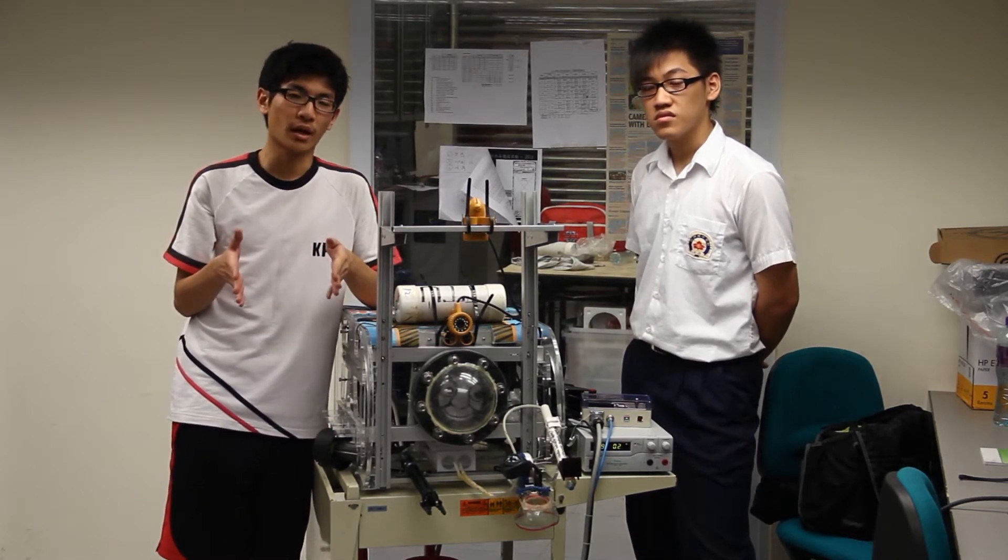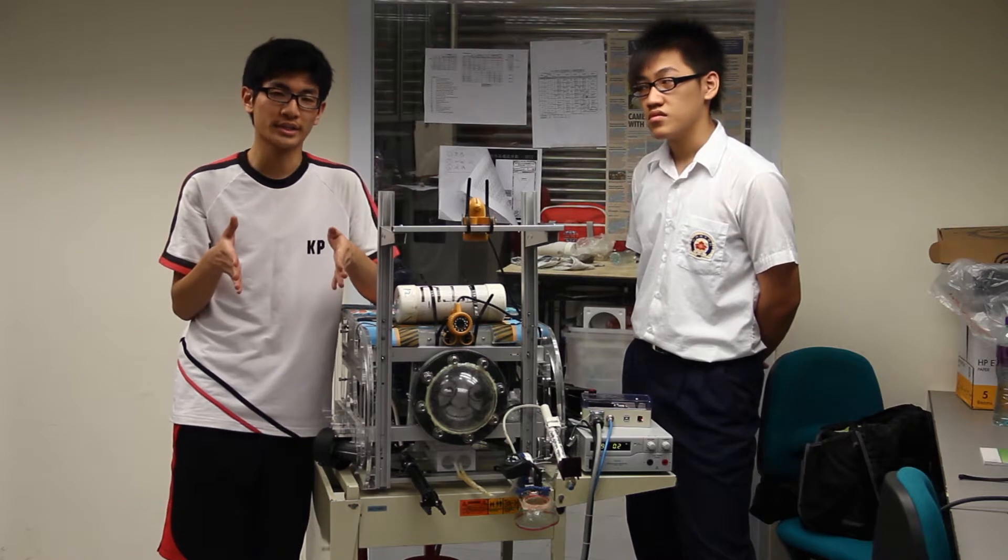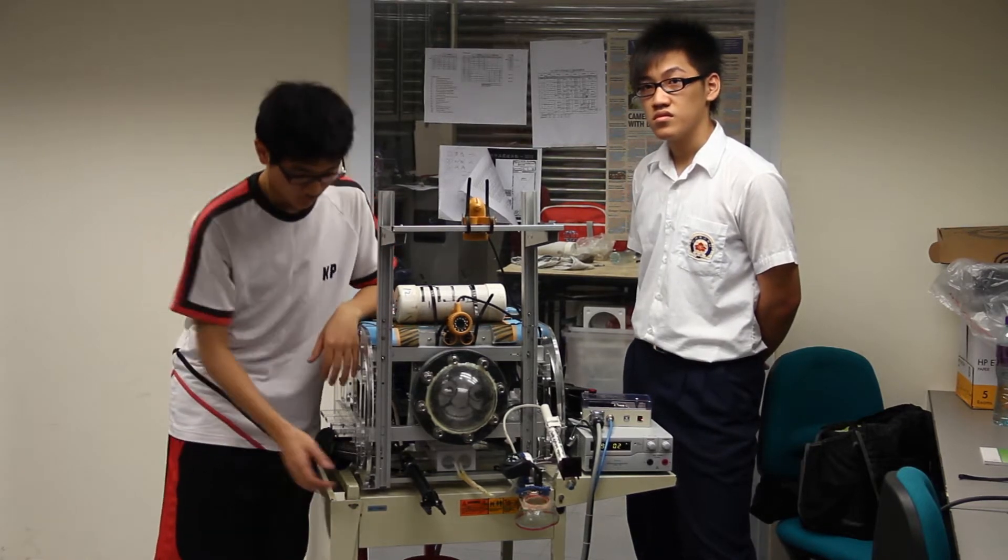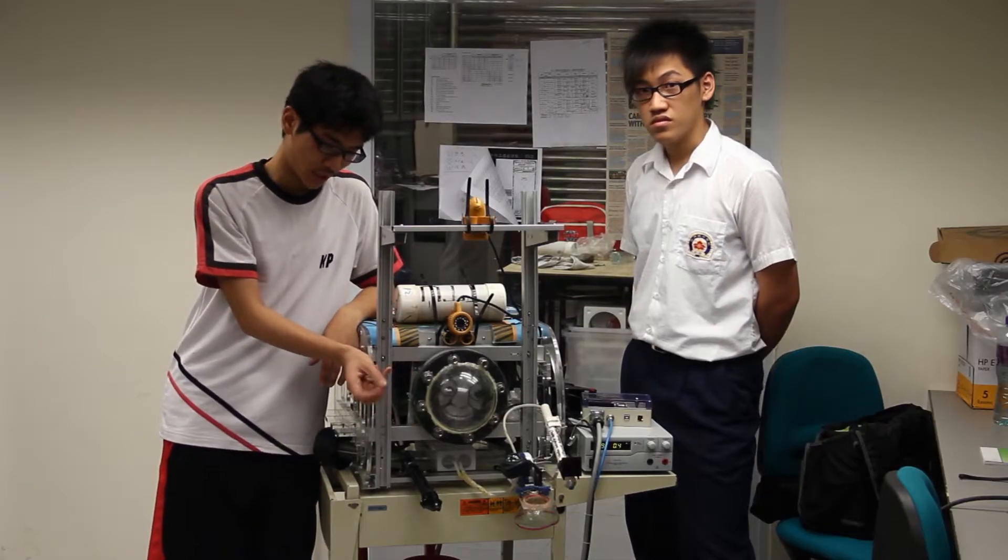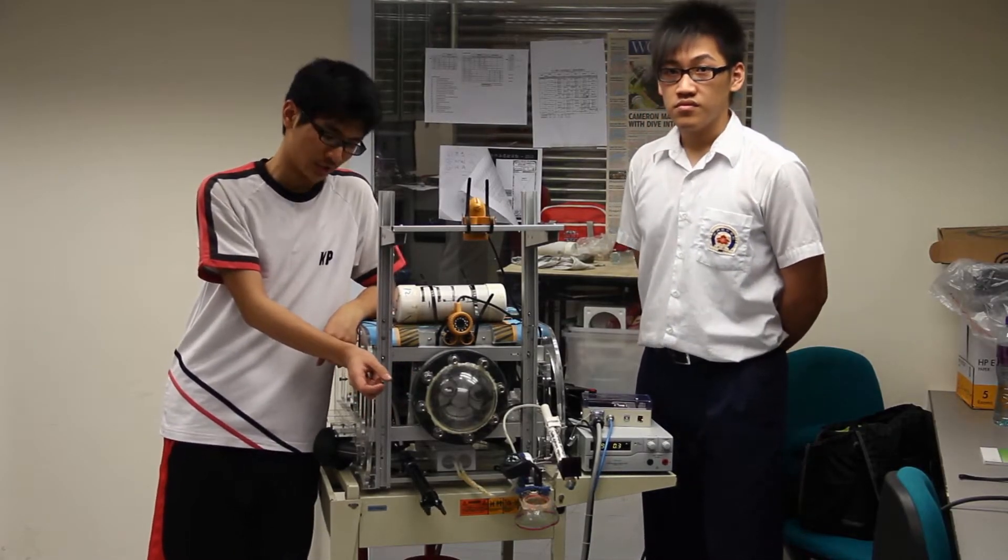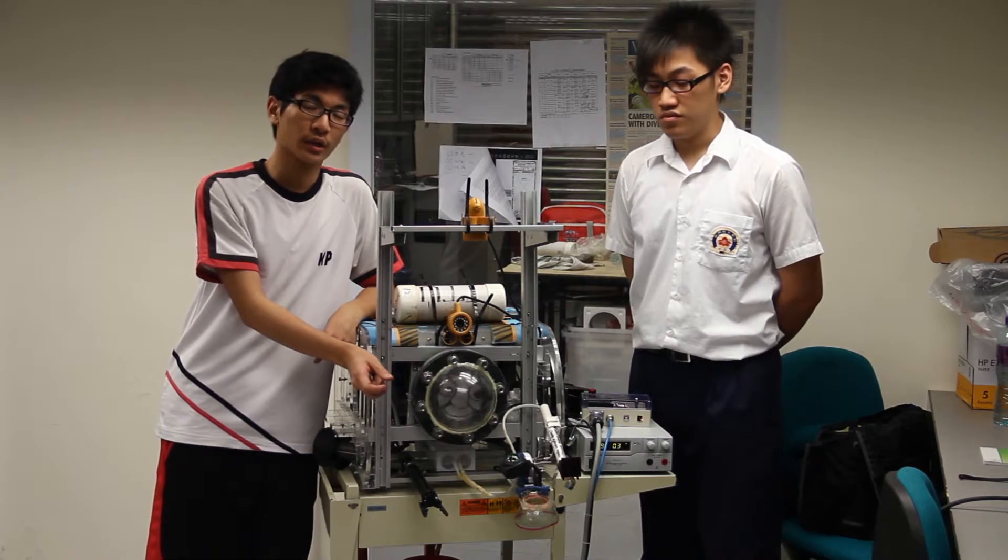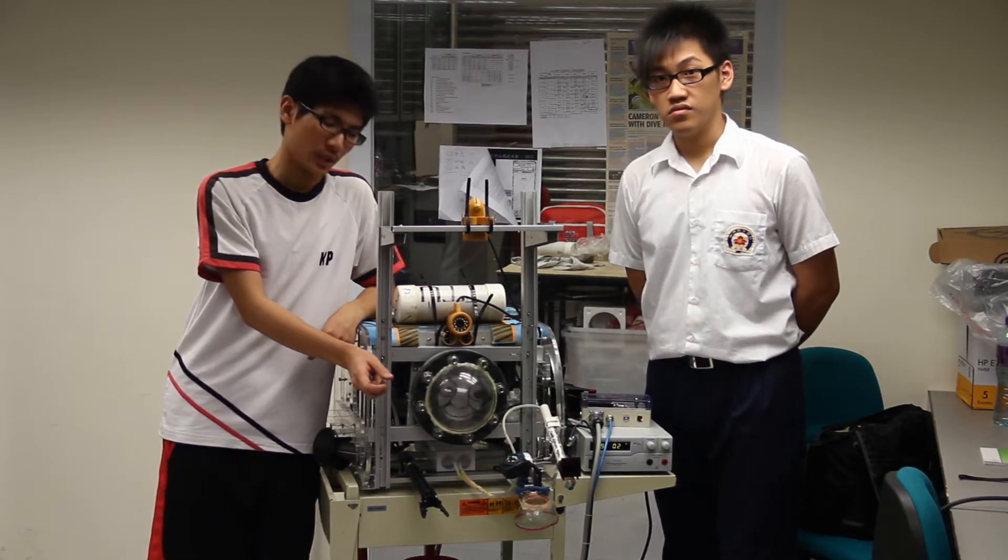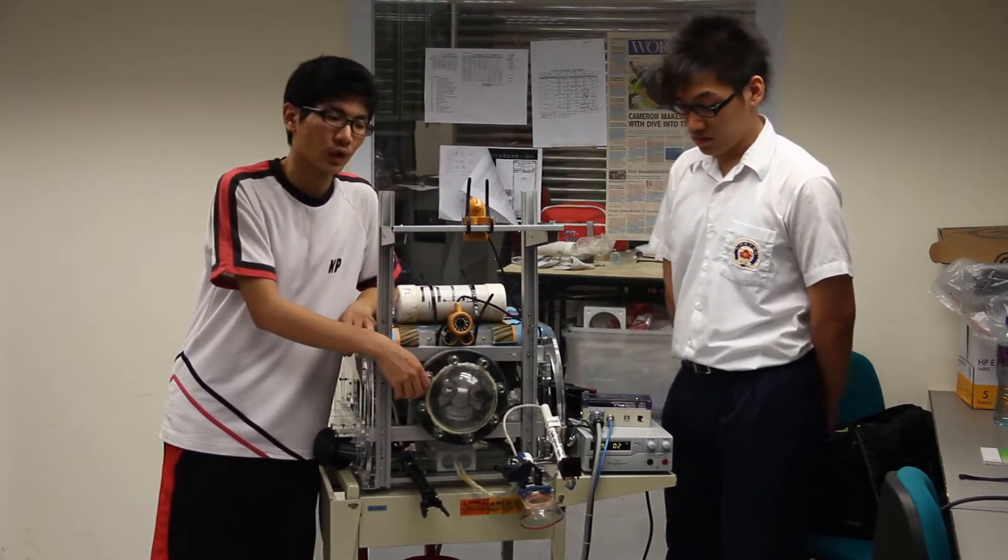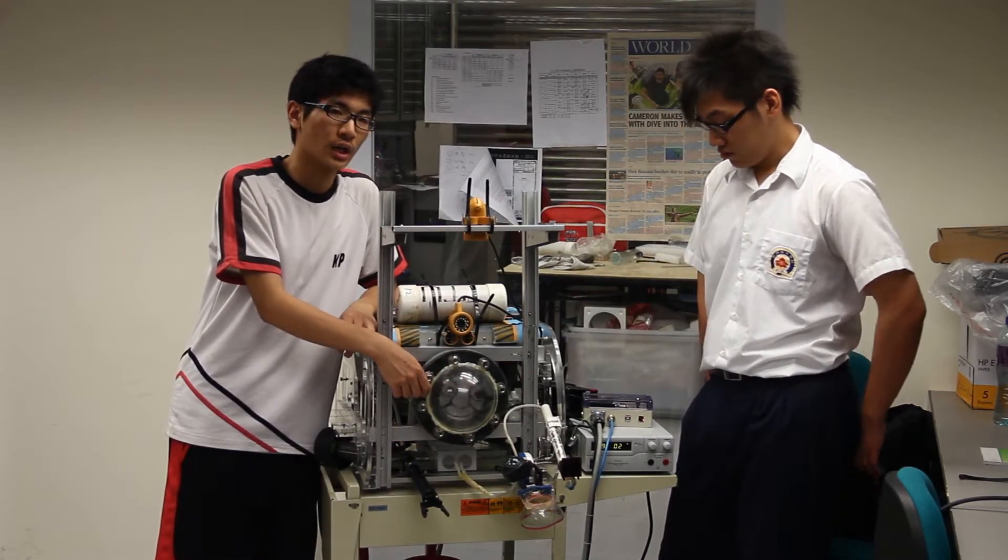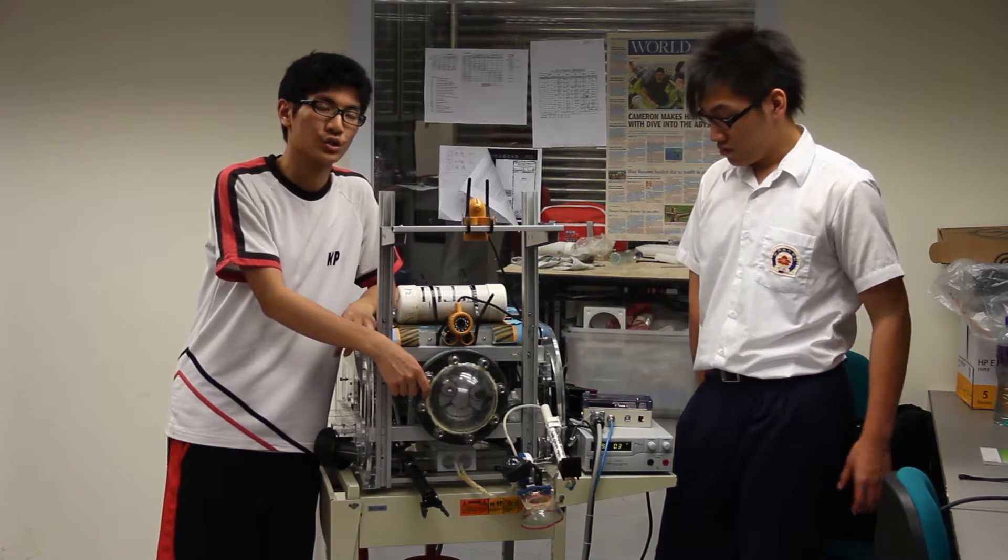We also have a manipulator here. It can open and close. It is free jars, so it can grip things more stably. And here is the measuring tape. It's for the task where we need to measure the shift track.